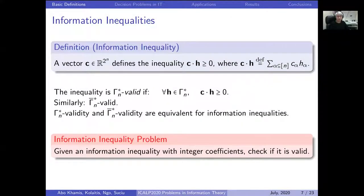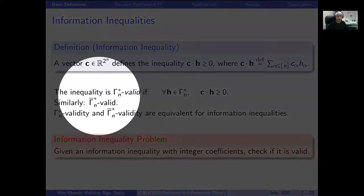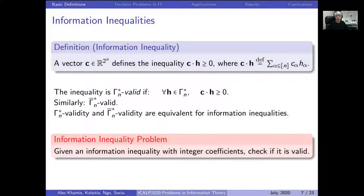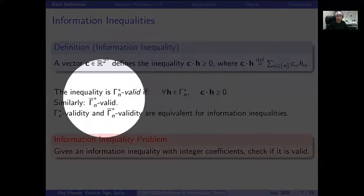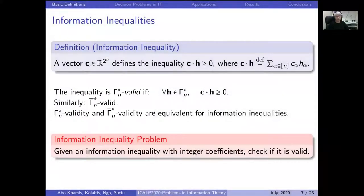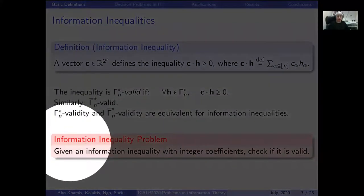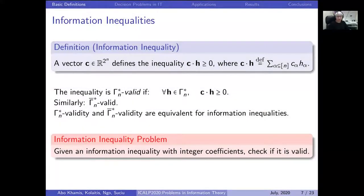Because these inequalities are simple linear expressions, the notions of validity over entropic vectors coincide with validity over almost entropic vectors. This justifies our first problem statement: the information inequality problem. Given an information inequality with integer coefficients, decide if it is valid. We insist on integer coefficients because we want to view this as a decision problem.